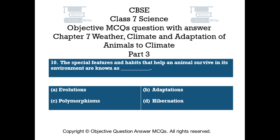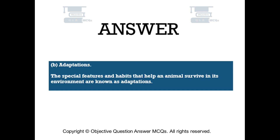Question number 10. The special features and habits that help an animal survive in its environment are known as: Option A: Adaptations. Option B: Polymorphisms. Option C: Hibernation. The right answer is Option A — Adaptations. The special features and habits that help an animal survive in its environment are known as adaptations.